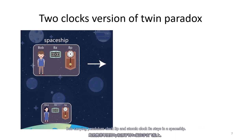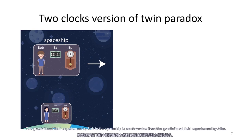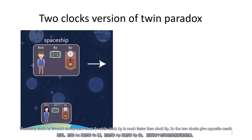In the meantime, Bob, carrying pendulum clock BP and atomic clock AB, stays in a spaceship. The gravitational field experienced by Bob in the spaceship is much weaker than the gravitational field experienced by Alice. Therefore, atomic clock AA is much slower than atomic clock AB, while pendulum clock AP is much faster than pendulum clock BP.